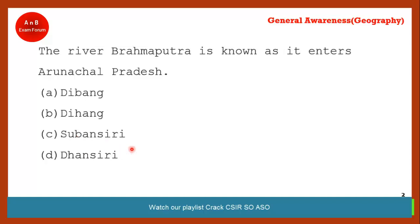Coming to the next question: the river Brahmaputra is known as what when it enters Arunachal Pradesh? It is known as Dihang — option B, Dihang. Brahmaputra is one of the most important rivers from which many questions can come.